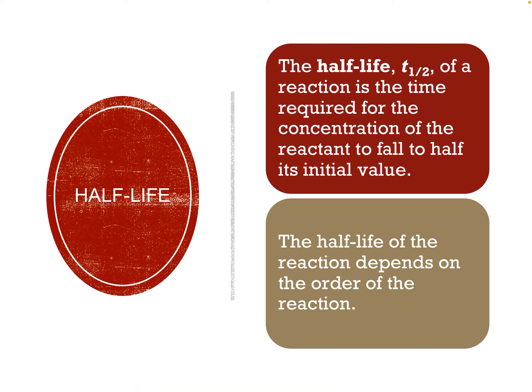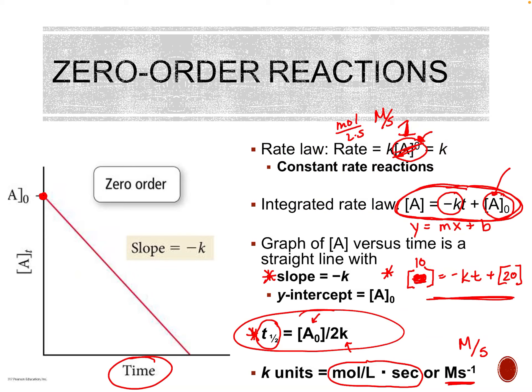The half-life is the amount of time it takes for the concentration to go to half of its initial value. So if we started with 50, it's the time it takes to get to 25, and then the next half-life takes it to 12.5. The half-life of the reaction depends on the order of the reaction, so half-lives do not happen the same way for different orders. For zero order, the half-life is [A]₀ / 2K.